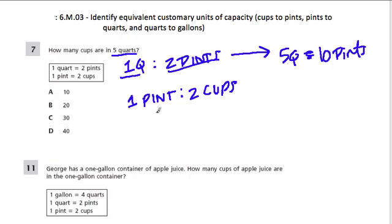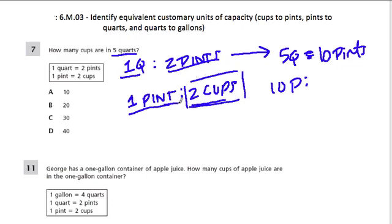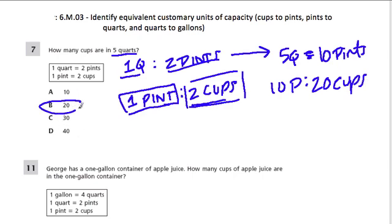For one pint we have two cups, but now we have ten pints. What's that going to be in terms of cups? We have ten times more pints — first we had one pint, now we have ten of them. So instead of two cups, we're now going to have twenty cups. So that's our answer: twenty cups.